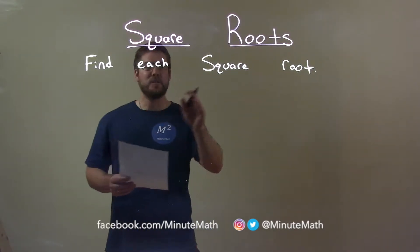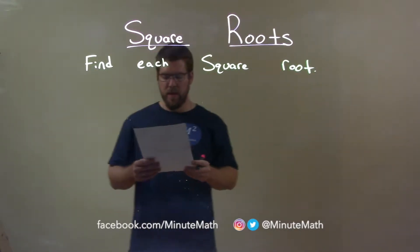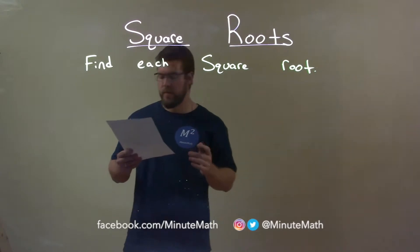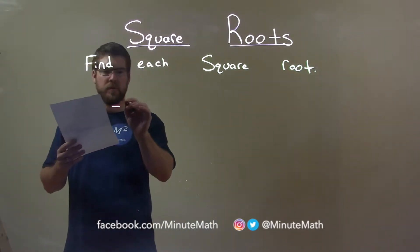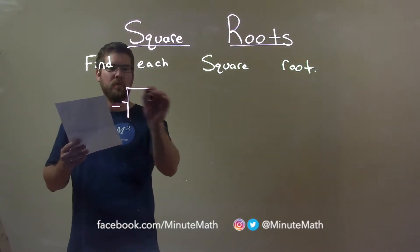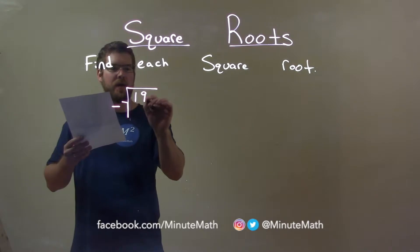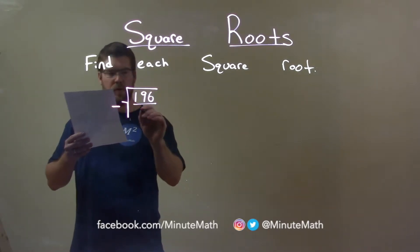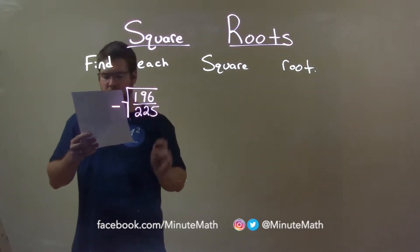We're going to find each square root. So, if I was given this number: the negative square root of 196 over 225.